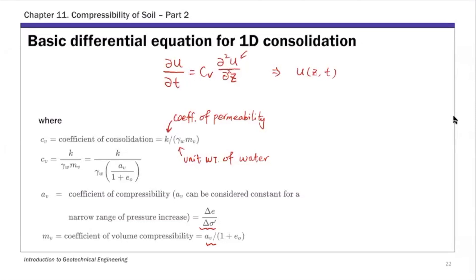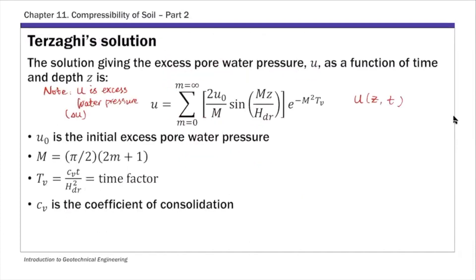That's the excess pore water pressure throughout the depths at a particular time, and then we link that to consolidation and settlement. The solution is a function of Z and T — depths and time. In this solution, there is a pretty important factor that we're going to use quite often today in our calculation: the time factor T sub V.